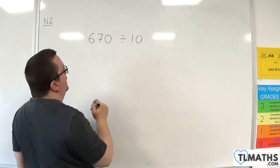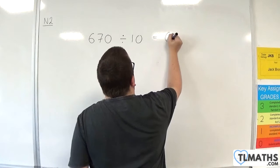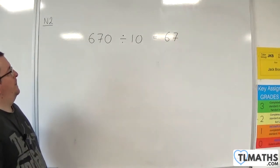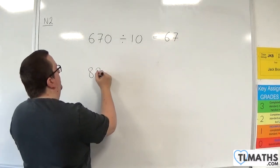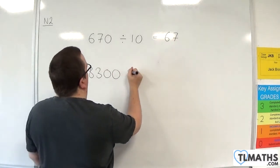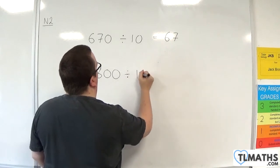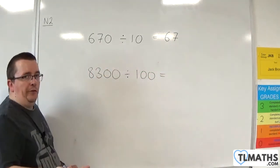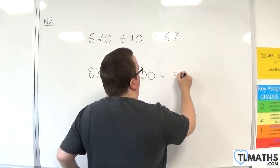okay, I'm just going to take a zero away and I get 67. That seems reasonable. And if I had 8300 and I want to divide that by 100, essentially I'm going to remove two zeros and I get left with 83.